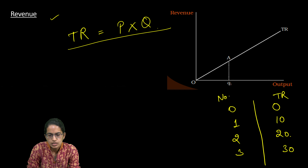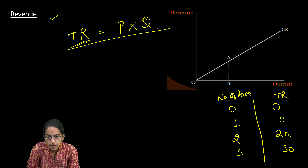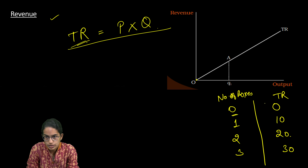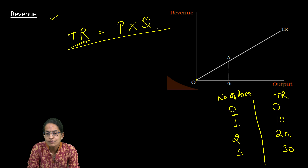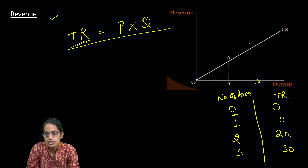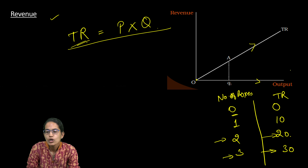There are three basic things to understand about total revenue. First, if the number of units is zero, there is no revenue at all. Second, total revenue increases linearly. Third, revenue increases with output — as output increases, revenue also increases. So more boxes means more revenue, meaning revenue is directly proportional to output.